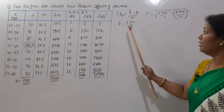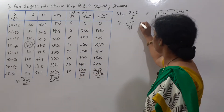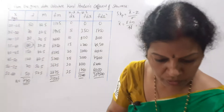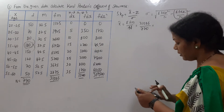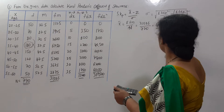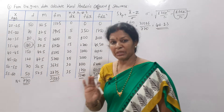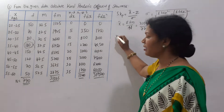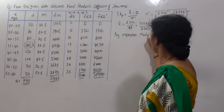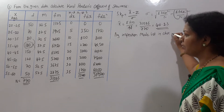First calculation: x̄ = σfm / n = 31,002.5 ÷ 770 = 40.23. So x̄ = 40.23. Next, we find z (mode). The highest frequency is 180, so by inspection the mode lies in class 35 to 40.